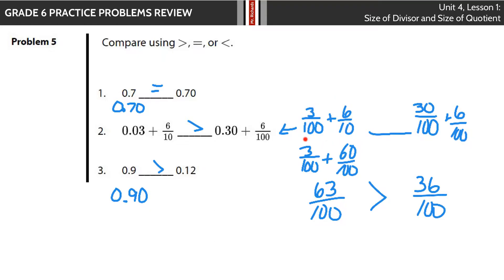Here, when you have 3 hundredths plus 6 tenths, I multiply the 6 by 10 and the 10 by 10 to get this into a fraction with hundredths. So you have 3 hundredths plus 60 hundredths is 63 hundredths. And of course, 63 hundredths is bigger than 36 hundredths. You could also add using decimals, 0.6 and 0.06, to compare.